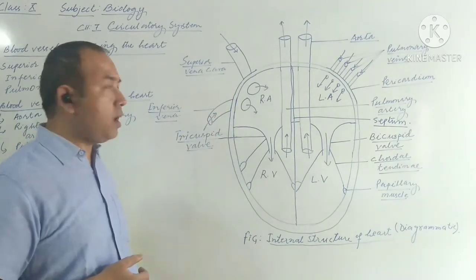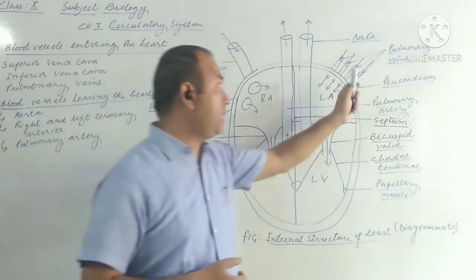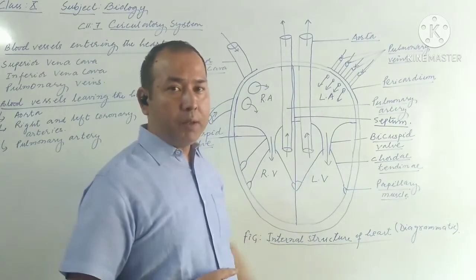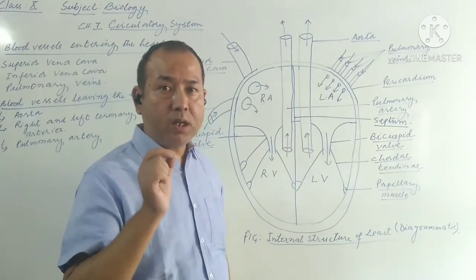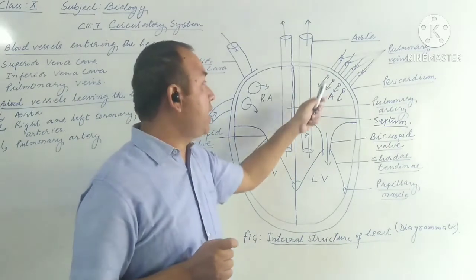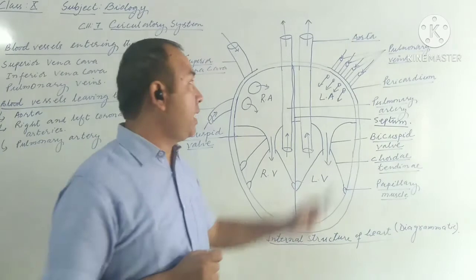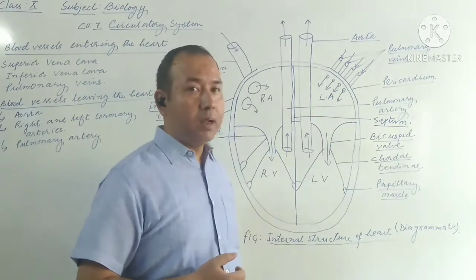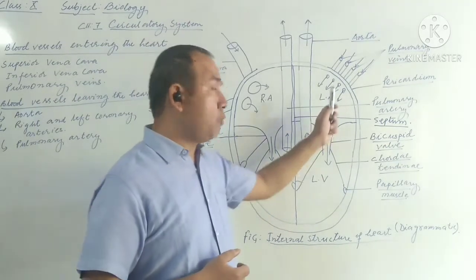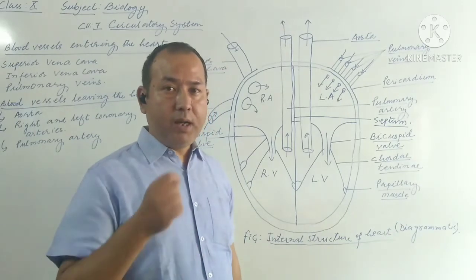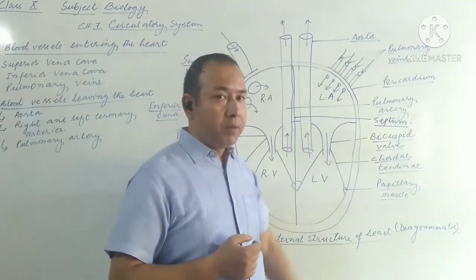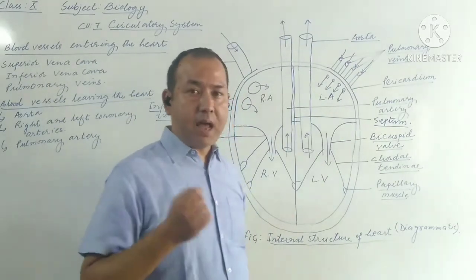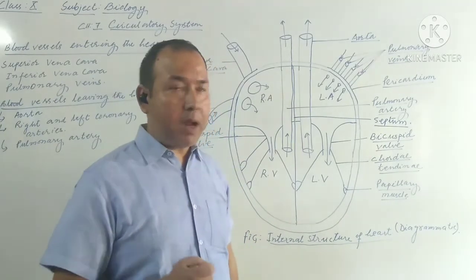The second is the Superior Vena Cava and Inferior Vena Cava. Now moving on to the third: pulmonary veins. Pulmonary veins carry pure or oxygenated blood from the lungs and drain into the left atrium. One important point: normally veins do not carry pure blood, but pulmonary veins are the exception — they carry pure blood after oxygenation from the lungs to the left atrium.